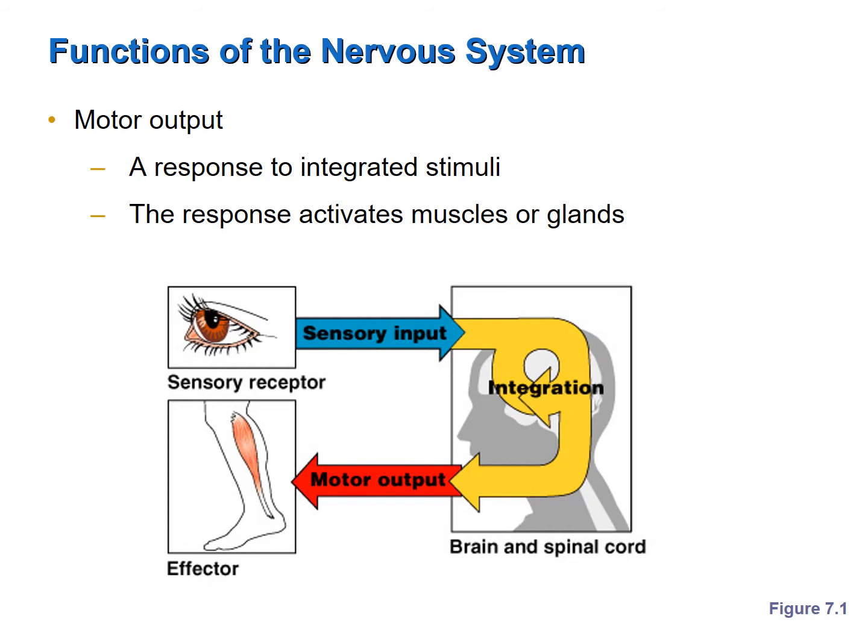An effector is nothing more than muscles and glands, as you may remember from our discussion on homeostasis and homeostatic mechanisms. The nervous system controls the other organ systems by controlling the muscles and glands in those systems. These are the three activities that every component of the nervous system is involved in, so keep this in mind as we proceed through the nervous system.